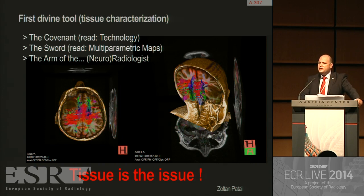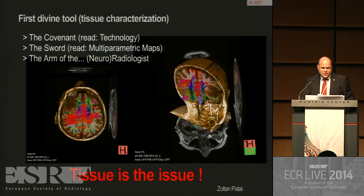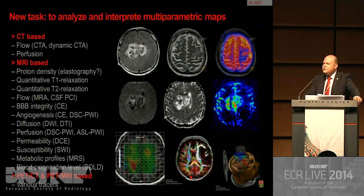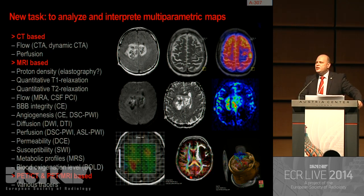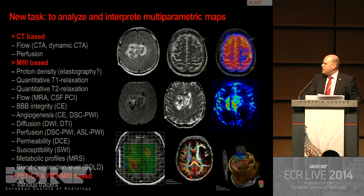I would like to quote a very dear friend and excellent expert, Professor Patay, who said once: 'tissue is the issue.' And since tissue is the issue, our task in the future is to analyze and interpret all of the multi-parametric maps we are capable of obtaining — whether CT-based, PET-CT, or PET-MRI based. They are rather important and provide very accurate information before any treatment is planned.